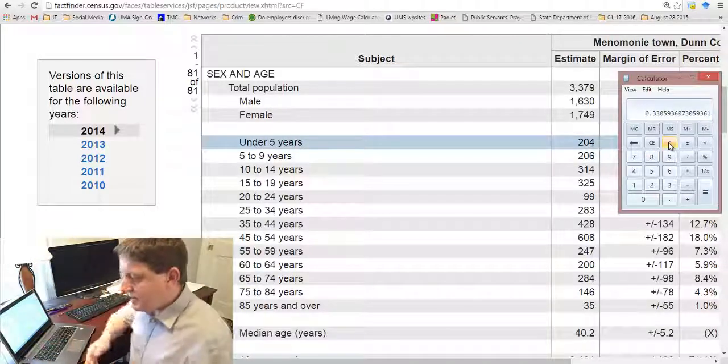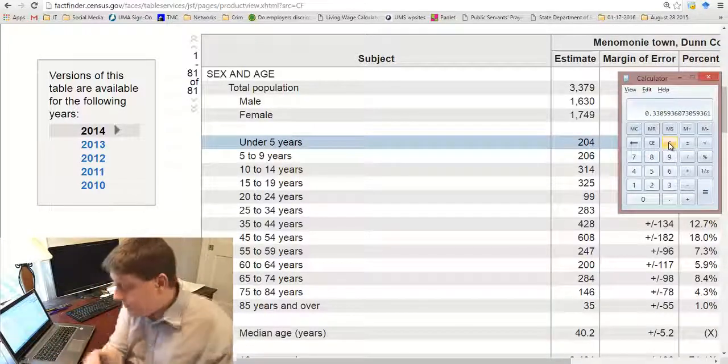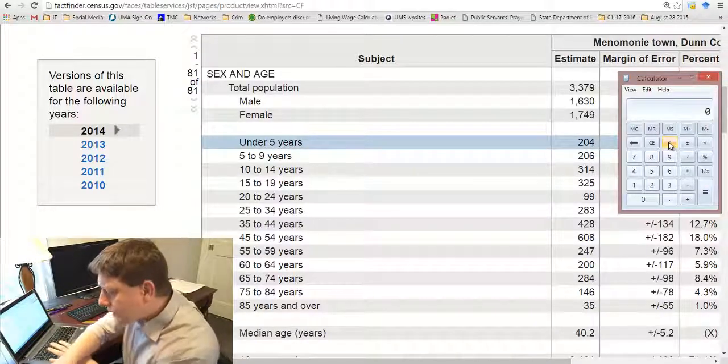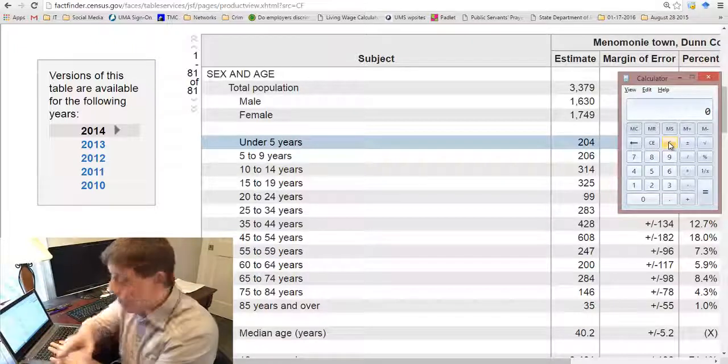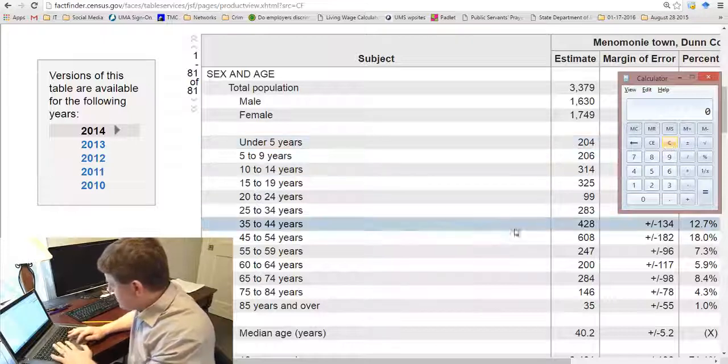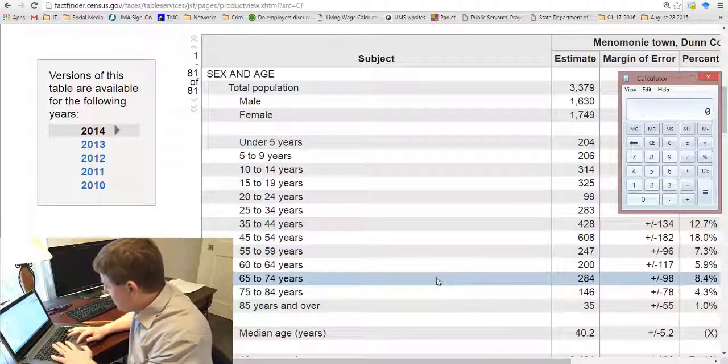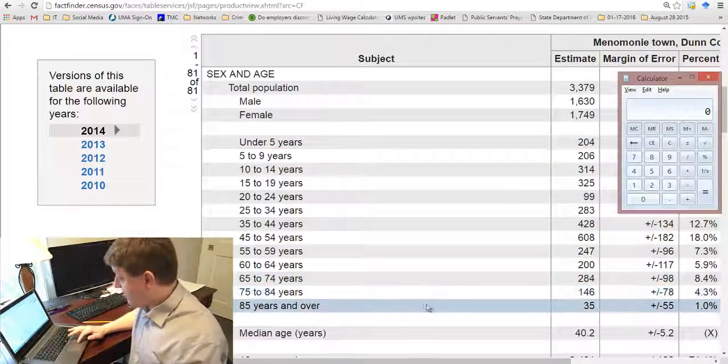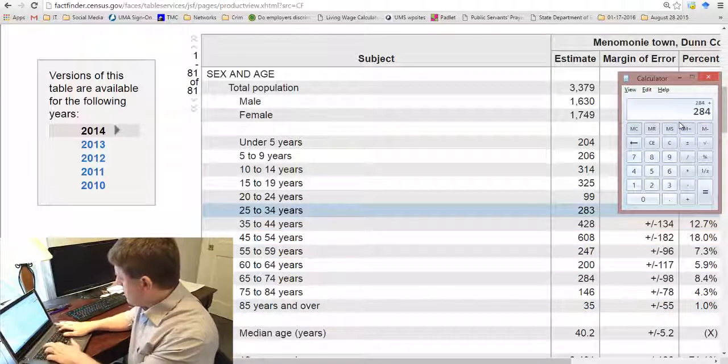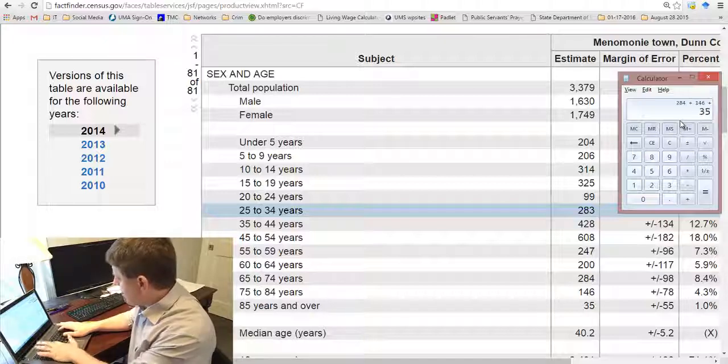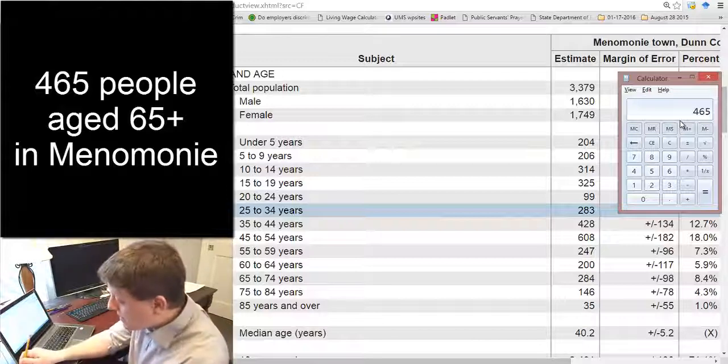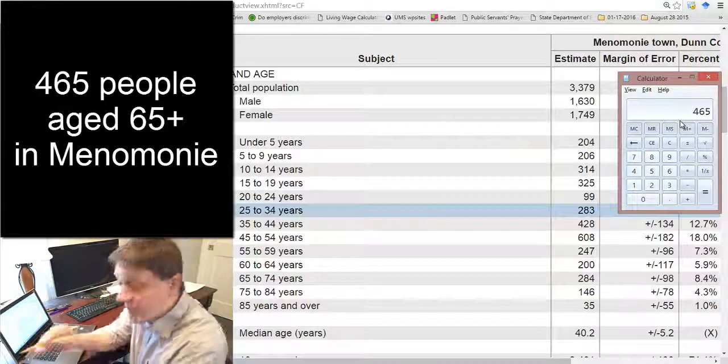Well, now we could ask the same question about the old age dependency ratio. And we could do that by looking at those who are aged 65 and older. That's the number in the numerator above the line in our division. So that's those who are 65 to 74, 75 to 84, and 85 years and older. That's 284 plus 146 plus 35. What could be simpler? Not much. That's pretty simple. We know that there are 465 people in the town of Menominee, Wisconsin, who are retirement age.